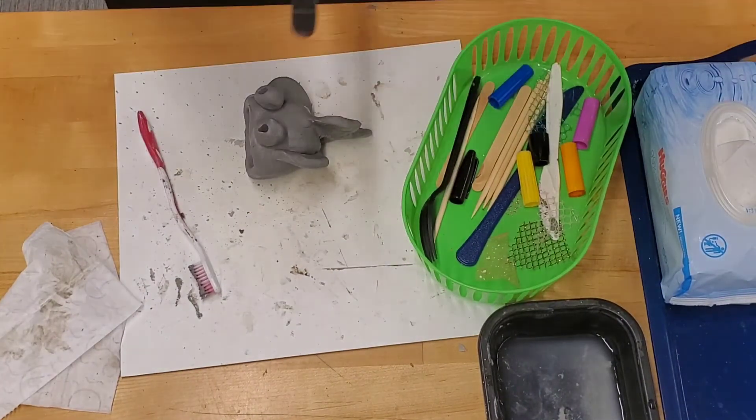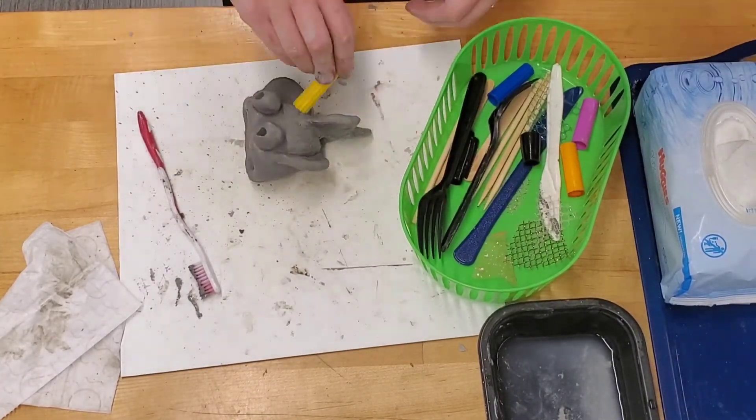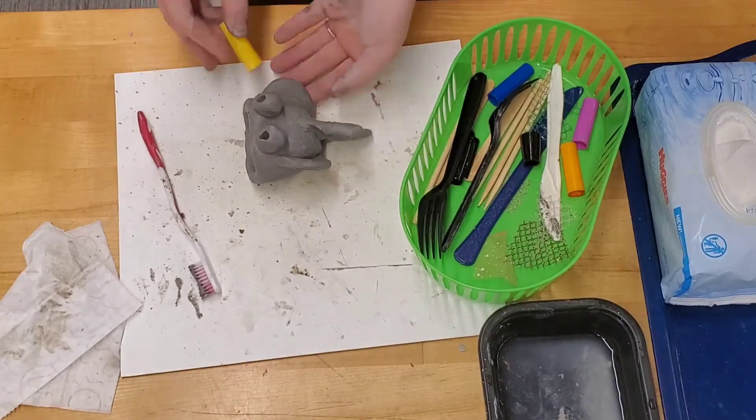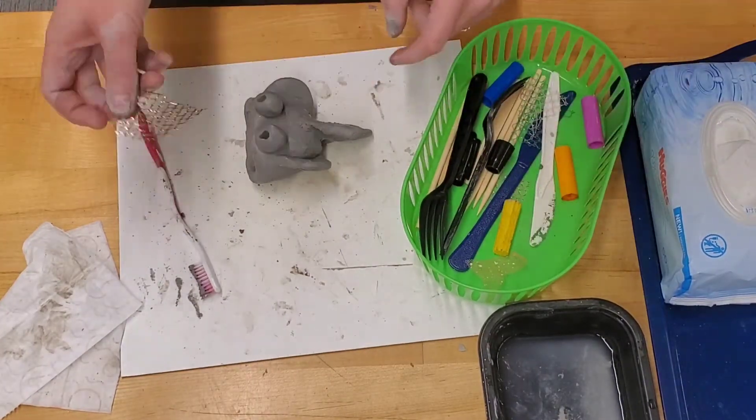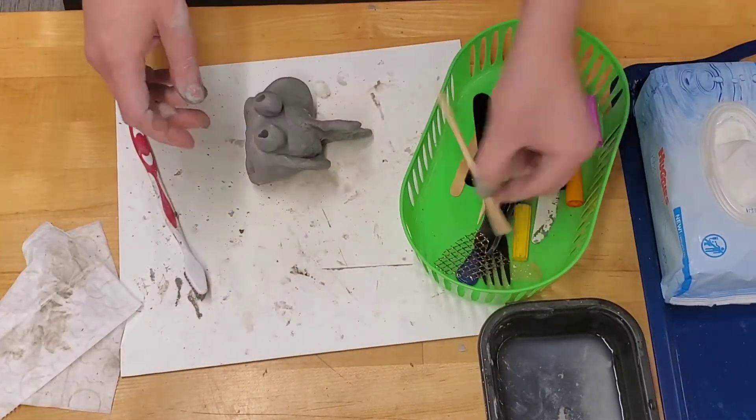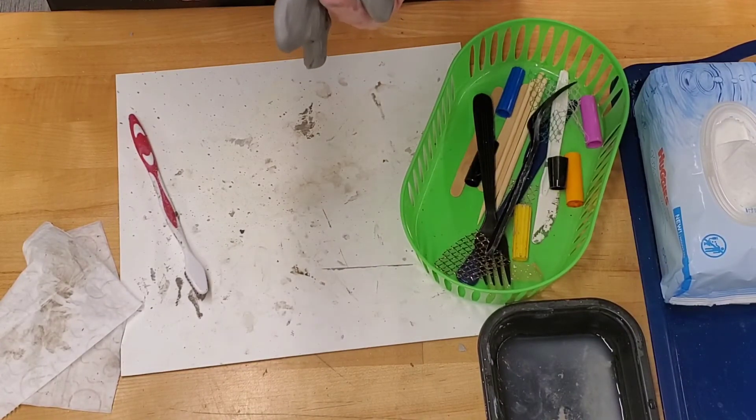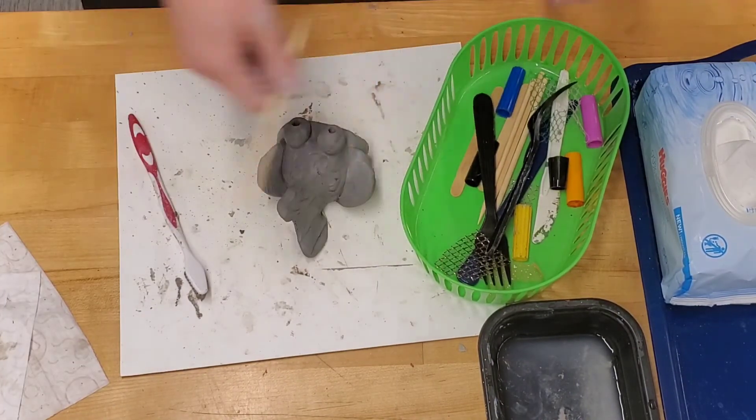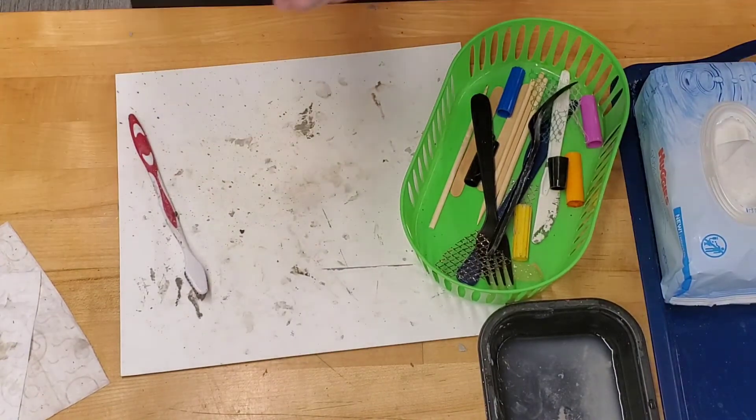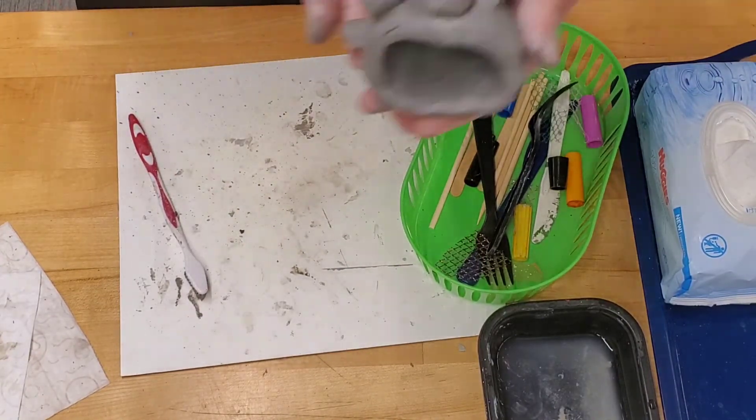You can also use the tools provided to add textures to your fish. Be careful as you press with the tools because you don't want to make a hole through it. Flip it over and very carefully write your name and class code on the bottom then bring it up for the teacher check.